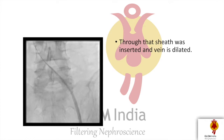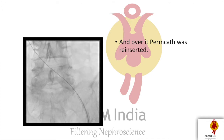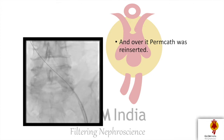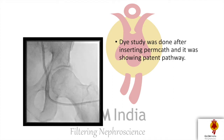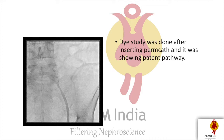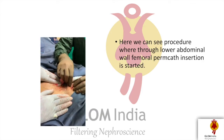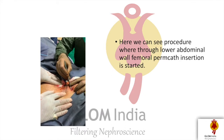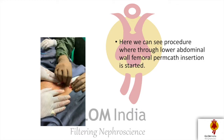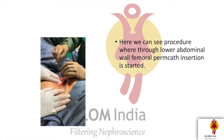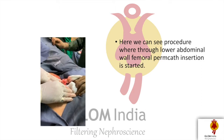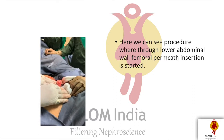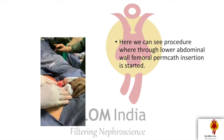Through that sheath the vein was dilated, and the tunneled catheter was reinserted. Here we can see the tip is now in the external iliac vein. The dye study from the newly inserted catheter through the abdominal wall showed a patent pathway. Here we can see the procedure where through the lower abdominal wall the femoral tunneled catheter insertion is started — the place through which the introducer needle was inserted and guide wire was positioned. Through that guide wire, a dilator is inserted to dilate the track for the femoral tunneled catheter.